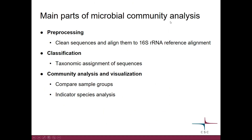We can divide microbial community analysis essentially into three major parts. There are lots of pre-processing steps where we need to clean the sequences in several ways, and then align them to the 16S ribosomal RNA reference alignment. Once that is done, we can classify the sequences and assign them taxonomically. Finally, we can move on to the community analysis and visualization.